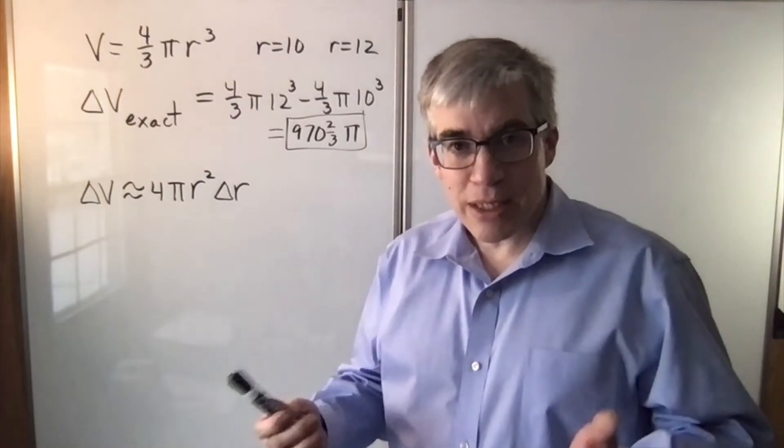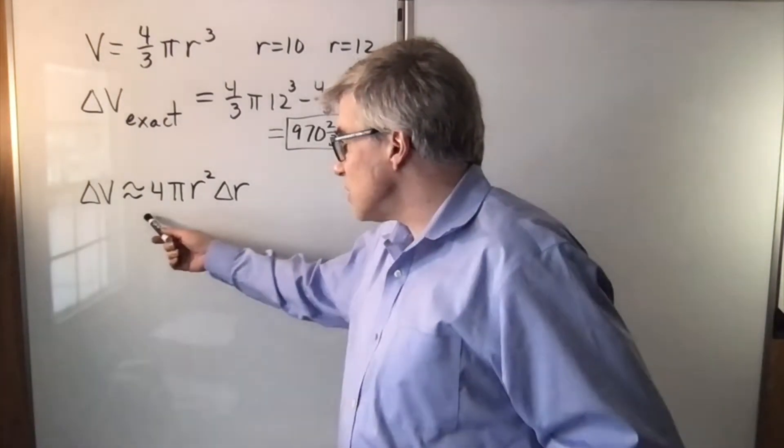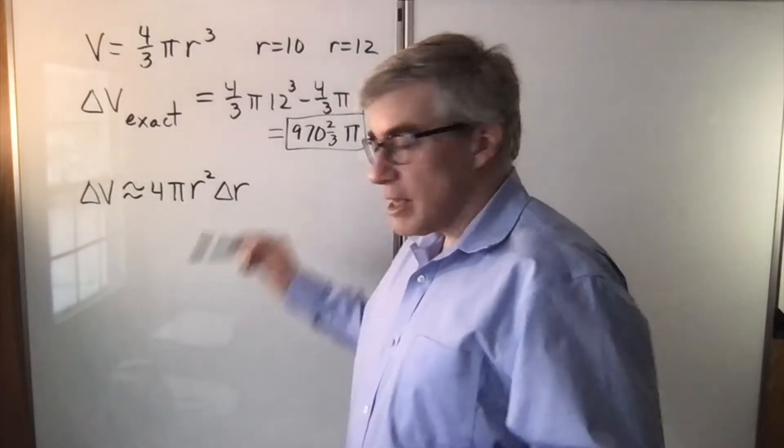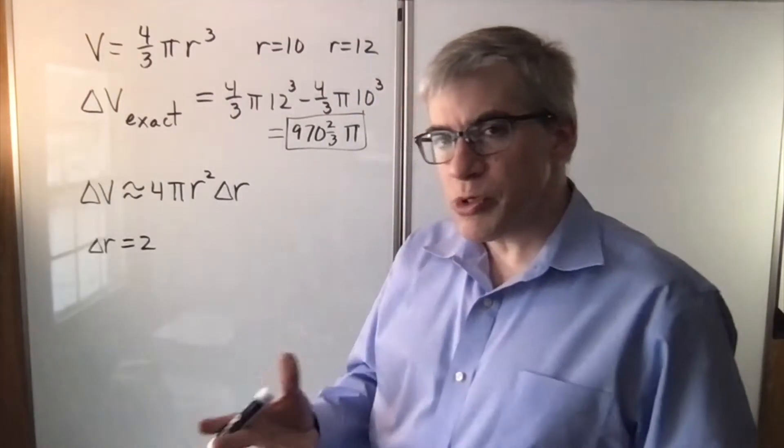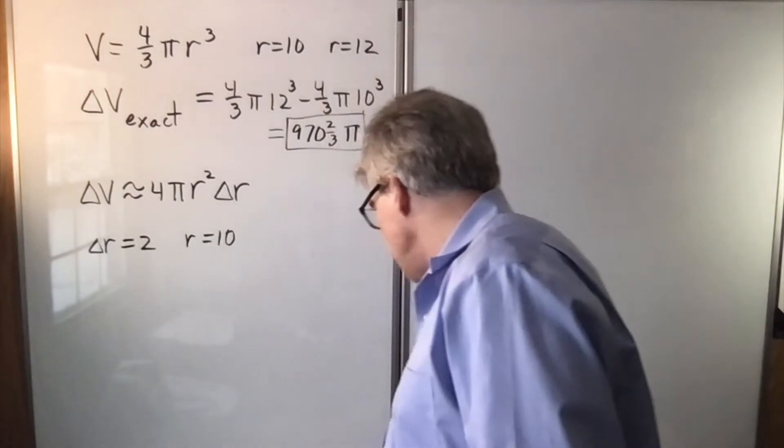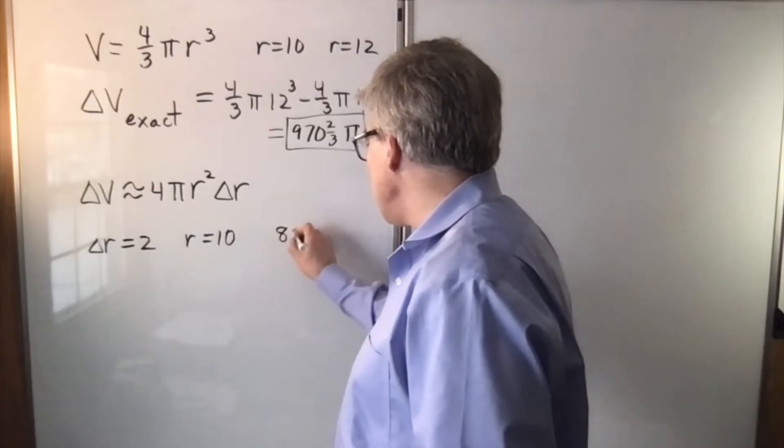Now a way we could approximate this, this is developed in calculus, is you're essentially taking the surface area formula and multiplying by a thickness. But what shall we use for r? We could use the first radius. If r is 10, then we get 800 pi.